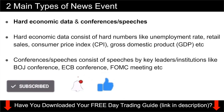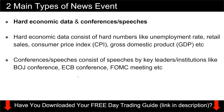The second type is conferences or speeches, where there is no number at all. This includes speeches by key leaders or institutions — for example, Bank of Japan conferences, ECB (European Central Bank) conferences, FOMC meetings, Federal Reserve president speeches, or even presidential speeches. Basically, any event where there is a dialogue going on with no numbers involved — people talking, potentially including Q&A sessions where the public can ask the ECB chairman about their plans. That is the second kind of news event.